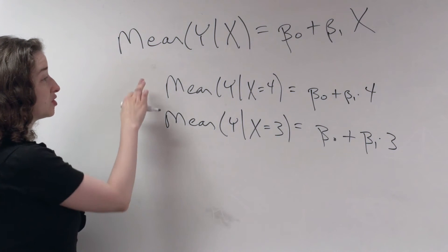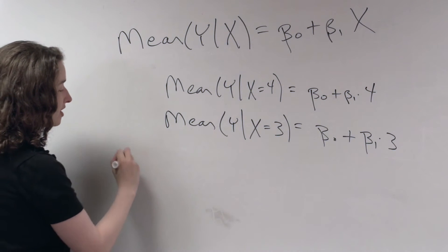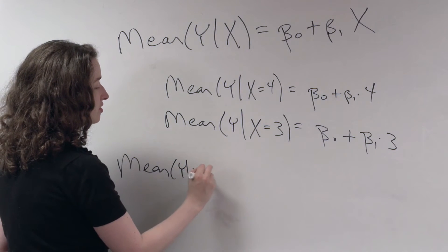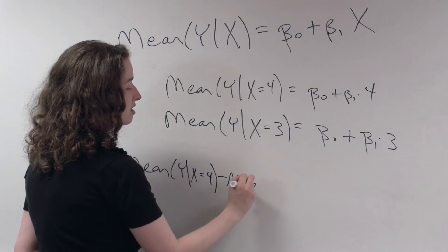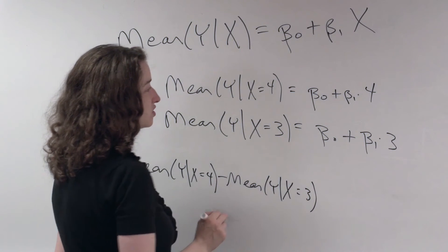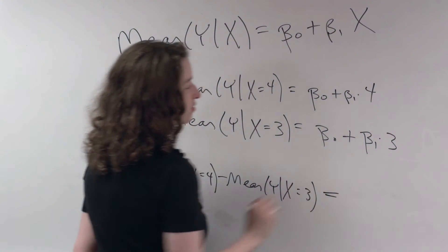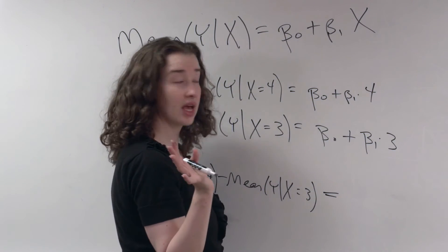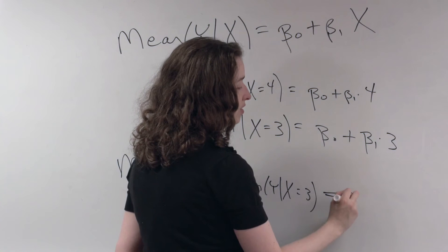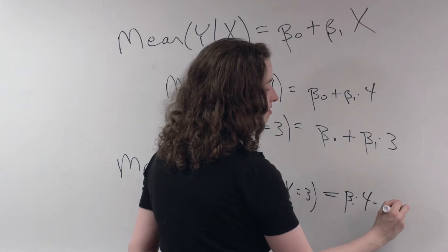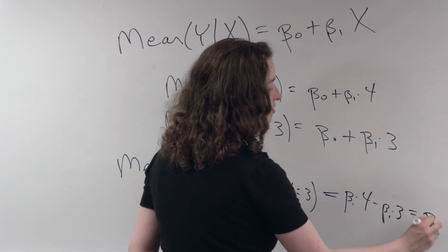So now what I'm going to do is I'm going to subtract these two equations from each other. On the left side I'm going to obtain the mean of Y given X is equal to 4, minus the mean of Y given X is equal to 3. I just subtracted those two left sides, now I'm going to subtract the two right sides. What's going to happen? Beta 0 minus beta 0 cancel. Beta 1 times 4 minus beta 1 times 3 is just equal to beta 1.